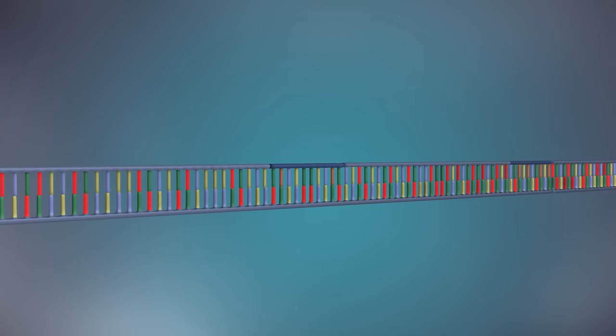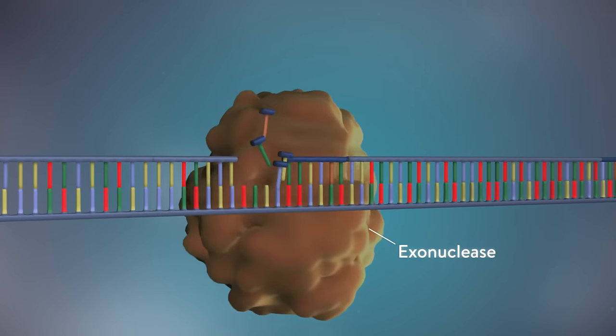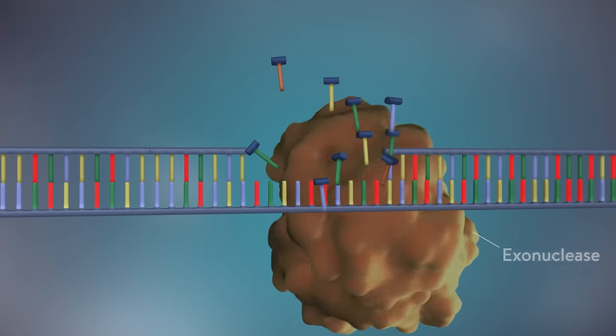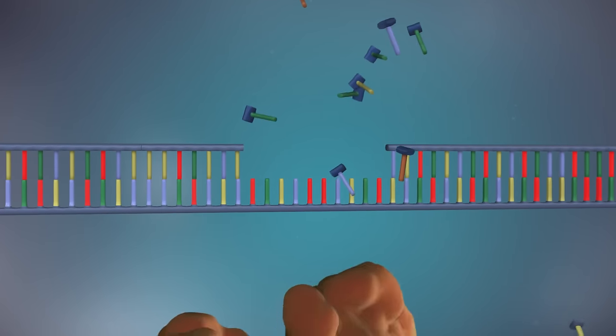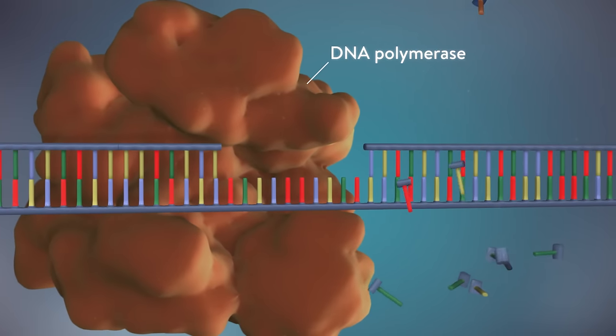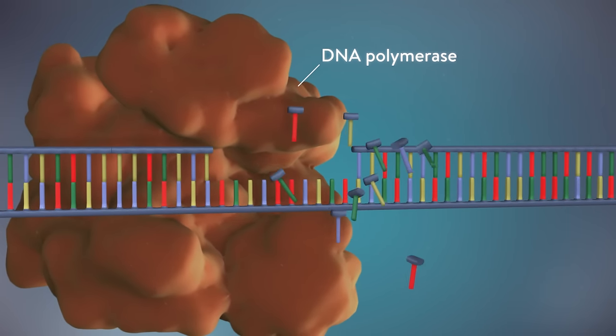Once the new DNA has been made, the enzyme exonuclease removes all the RNA primers from both strands of DNA. Another DNA polymerase enzyme then fills in the gaps that are left behind with DNA.